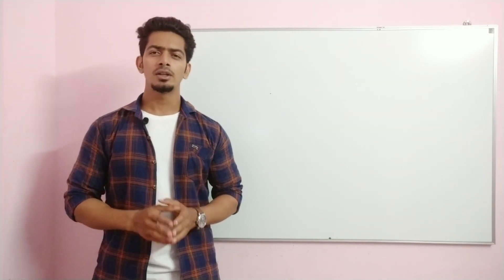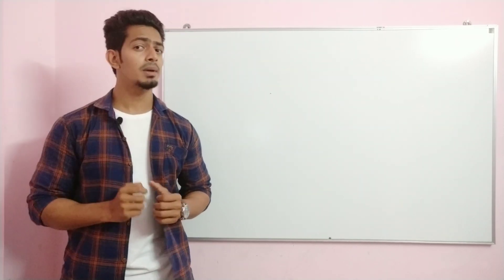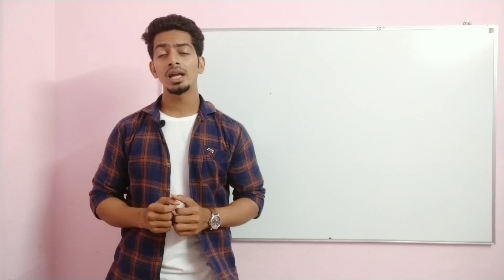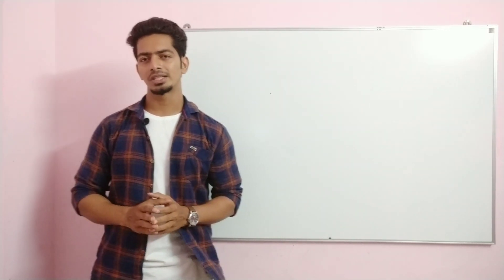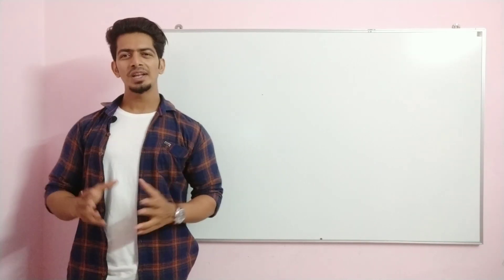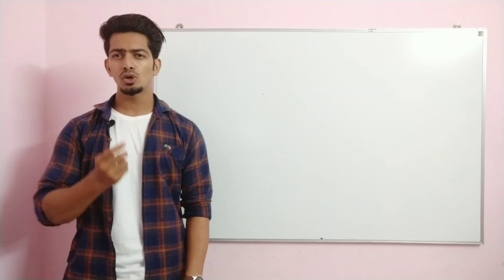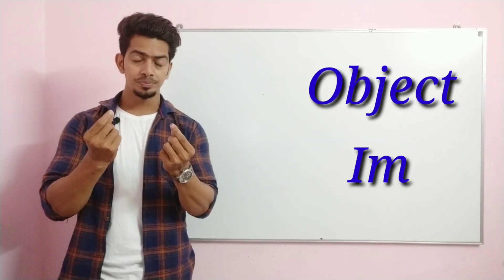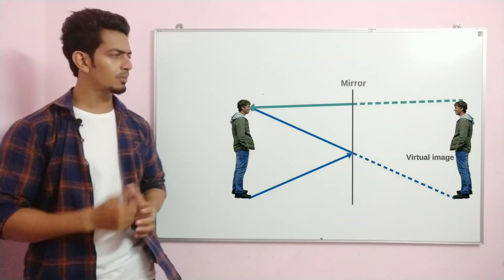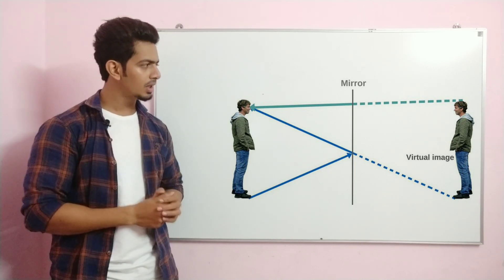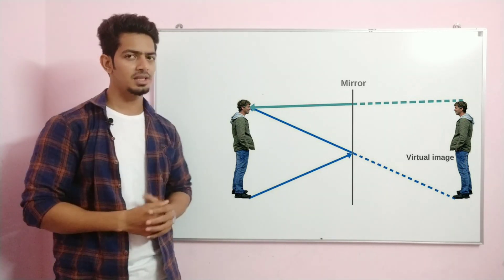So, reflection of light — when we think about reflection, we think about two simple things: object and image. So what is object and image? Look at this diagram. There is a person standing here, there is a plane mirror, and on the other side is the same person.